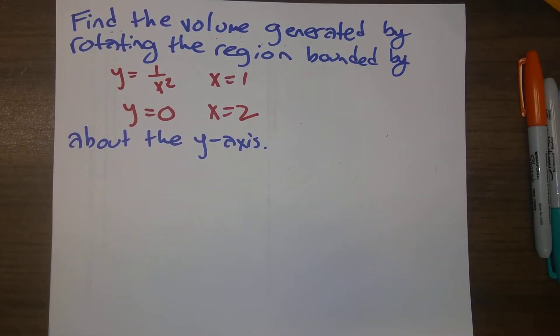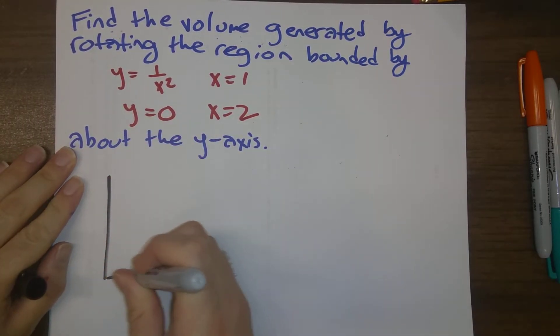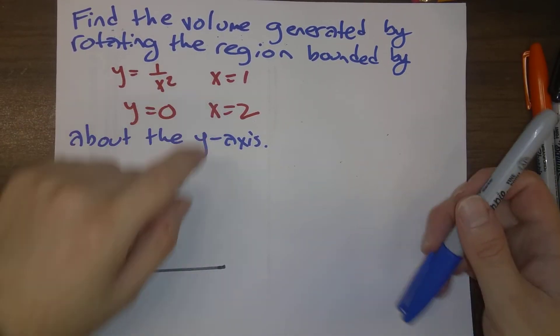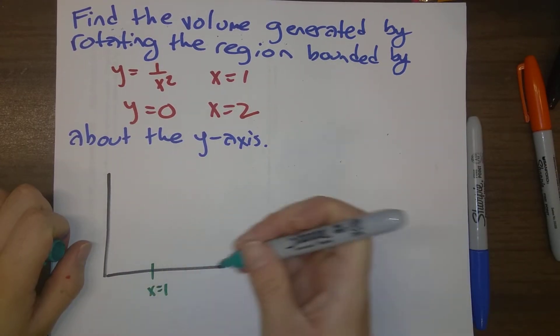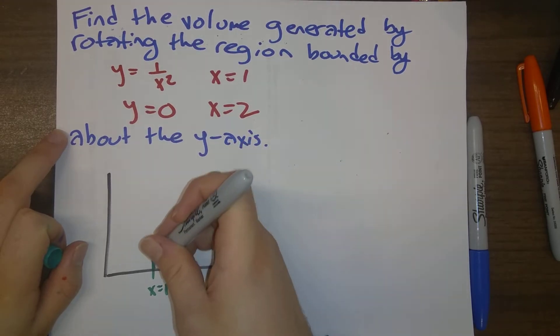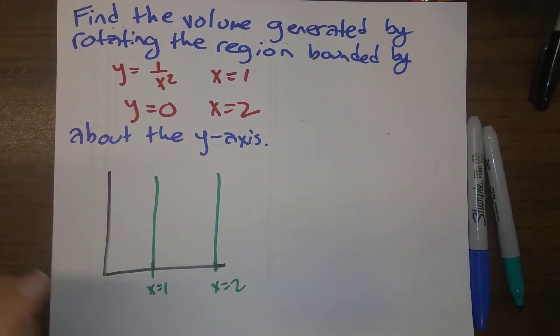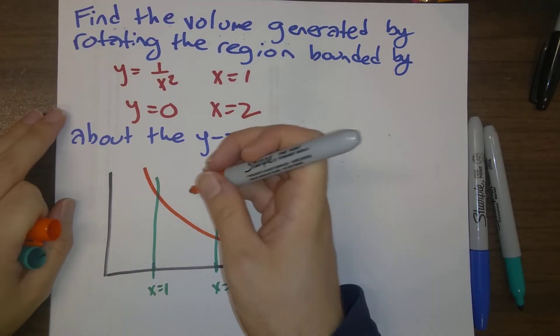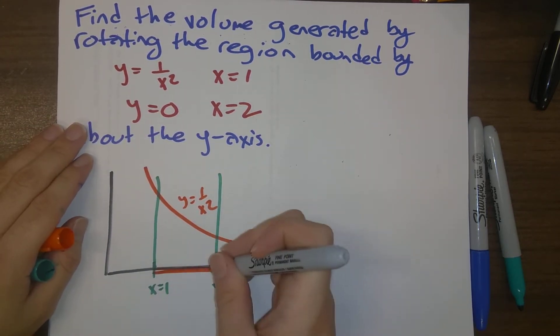So let's start by drawing a picture. We don't need to do that in order to use the formula, but I think it will be insightful to see what's going on here. We've got bounds at x equals 1 and x equals 2. So let's draw those lines. Then we've also got y equals 1 over x squared. It will look like that.